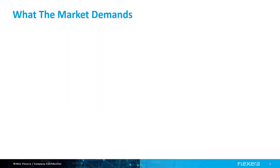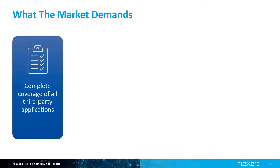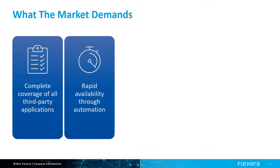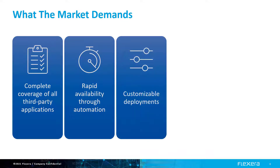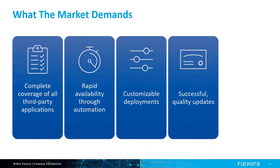With that huge need for packages, what does the market demand? Key is a complete application catalog that covers every third-party application you care about. You also want rapid updates — when a new version is available, you want it packaged and ready to deploy as soon as possible. In many cases you want to customize it, controlling configuration details in your enterprise rather than rolling out a vanilla package. And you need successful, quality updates that don't have a negative effect and cause problems.